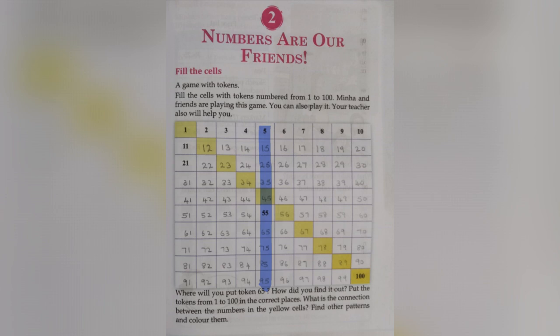The connection between the numbers is that they have a difference of 11. For example, 12 minus 1 is equal to 11, and 23 minus 12 is also equal to 11.